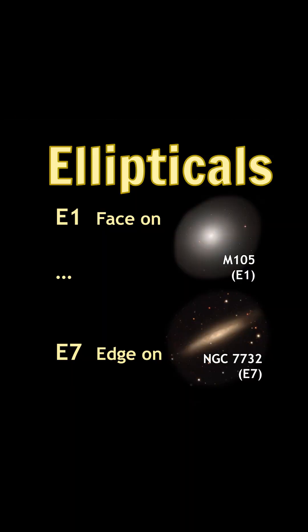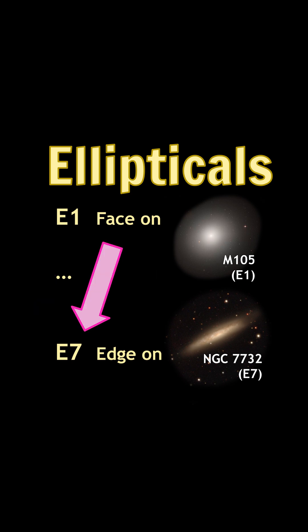Ellipticals are the easiest to decode. The letter E tells us the galaxy is elliptical. The number following it tells us how squashed the galaxy is with respect to us — one meaning it is face-on, and seven meaning it is edge-on.